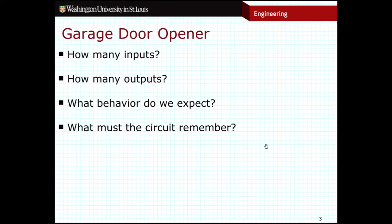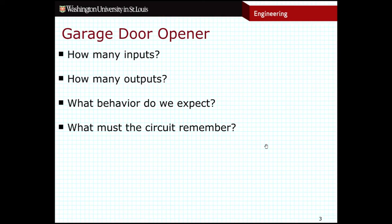There's the button, which is very clearly an input. The sensor also matters — that sensor that's going to detect obstructions also matters. We also care about whether we're at the top or at the bottom because that changes how the button performs. If the garage door is open and at the top, I want the door to move down when I push the button. If it's at the bottom, if it's closed, I want the door to move up when I push the button. So we have those four inputs.